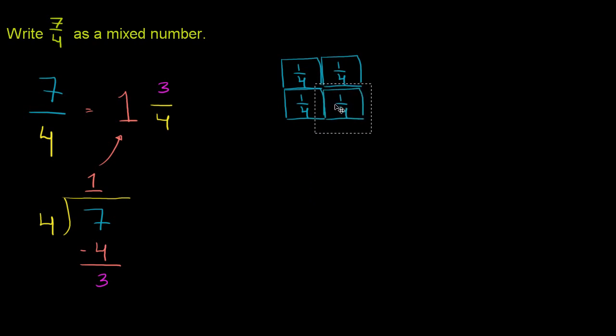Now I have 4 one fourths. Now this is a whole, right? I have 4 one fourths. This is a whole. So let me start on another whole. So now I have 5. Now I have 6 one fourths. And now I have 7 one fourths.